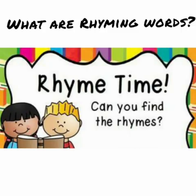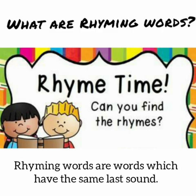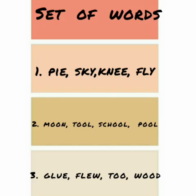It's rhyme time! Can you find the rhymes? But wait — what are rhyming words? Rhyming words are words which have the same last sound. Look and read the set of words and we will circle the words which do not rhyme. Set one: pie, sky, knee, fly. Which word do you think does not rhyme? Knee. So we will circle the word 'knee.'